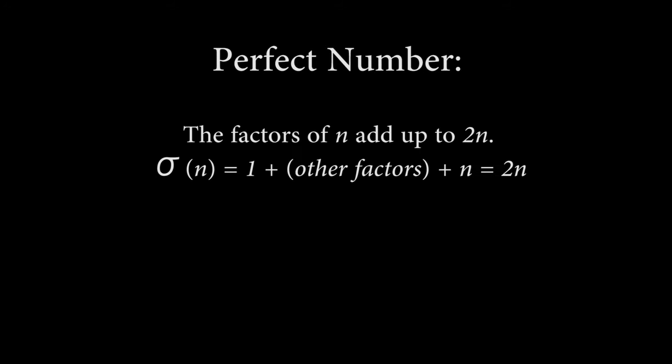What is a perfect number? Well, if n is a perfect number, then all of its factors, including itself, will add up to 2n.